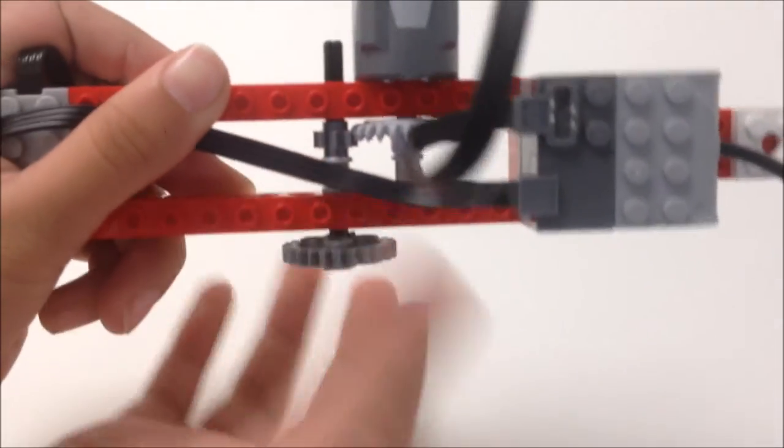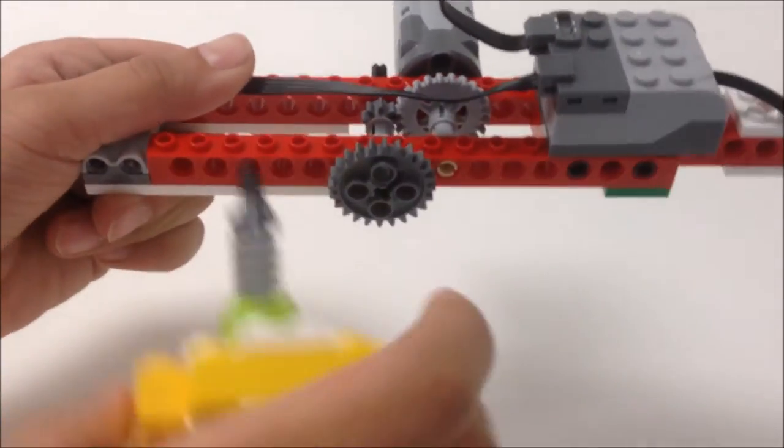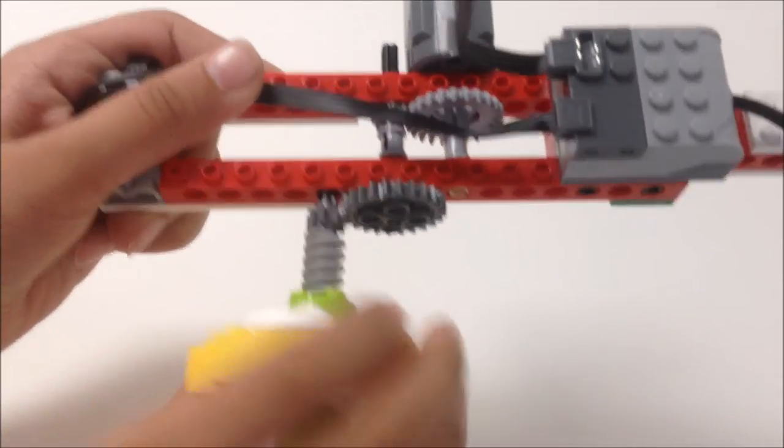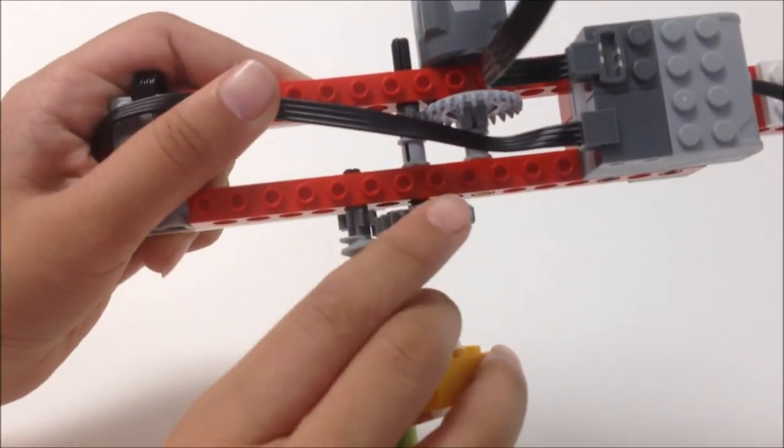This gear is attached to a rod which has another gear on it. You're going to put this here and then this gear meshes with that gear, which makes this spin.